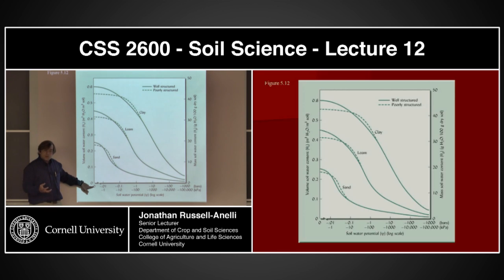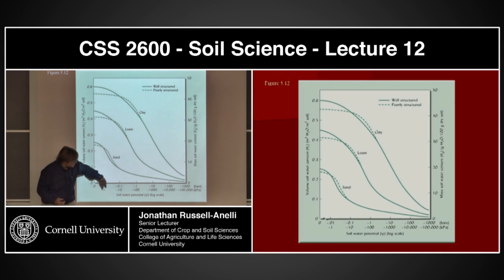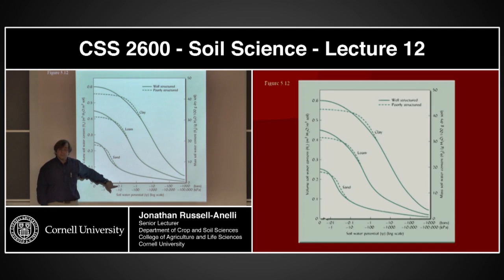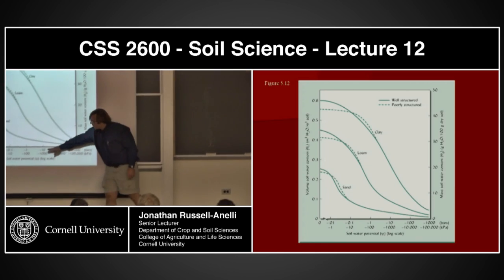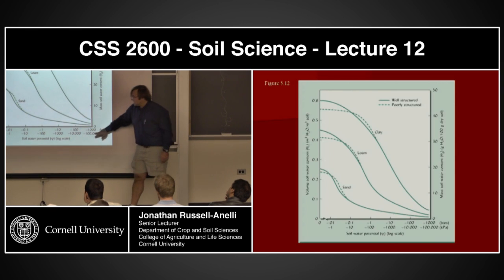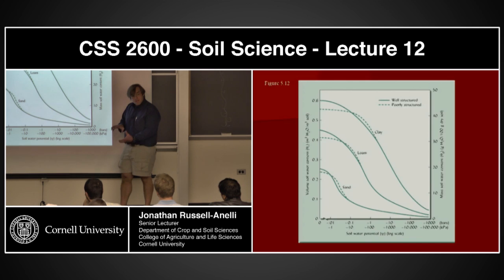Now, as water starts being pulled out of that system — initially due to gravity — the matrix potential of that soil is going to become more negative. There are basically two scales here: bars on top, kilopascals down here. But this is basically a measurement of the negative pressure — it's a pseudo-measurement for matrix potential. It's suction.